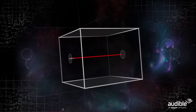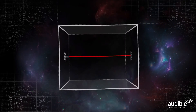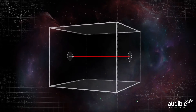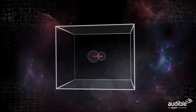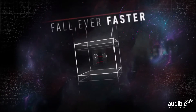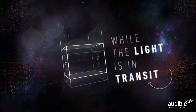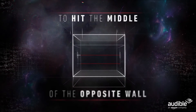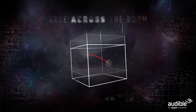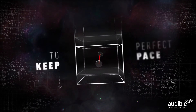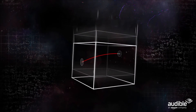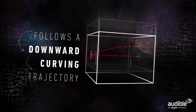Watching this from the outside, you will surely agree that the laser light begins and ends at the same locations in the room as I claim that it does. But I need you to picture this happening in a room that, from your perspective, is being pulled downward by gravity, causing the room to fall ever faster while the light is in transit. For the laser light to hit the middle of the opposite wall, the light itself must not only race across the room, it must also drop downward to keep perfect pace with the falling room itself, which means that from your perspective, the light follows a downward, curving trajectory.